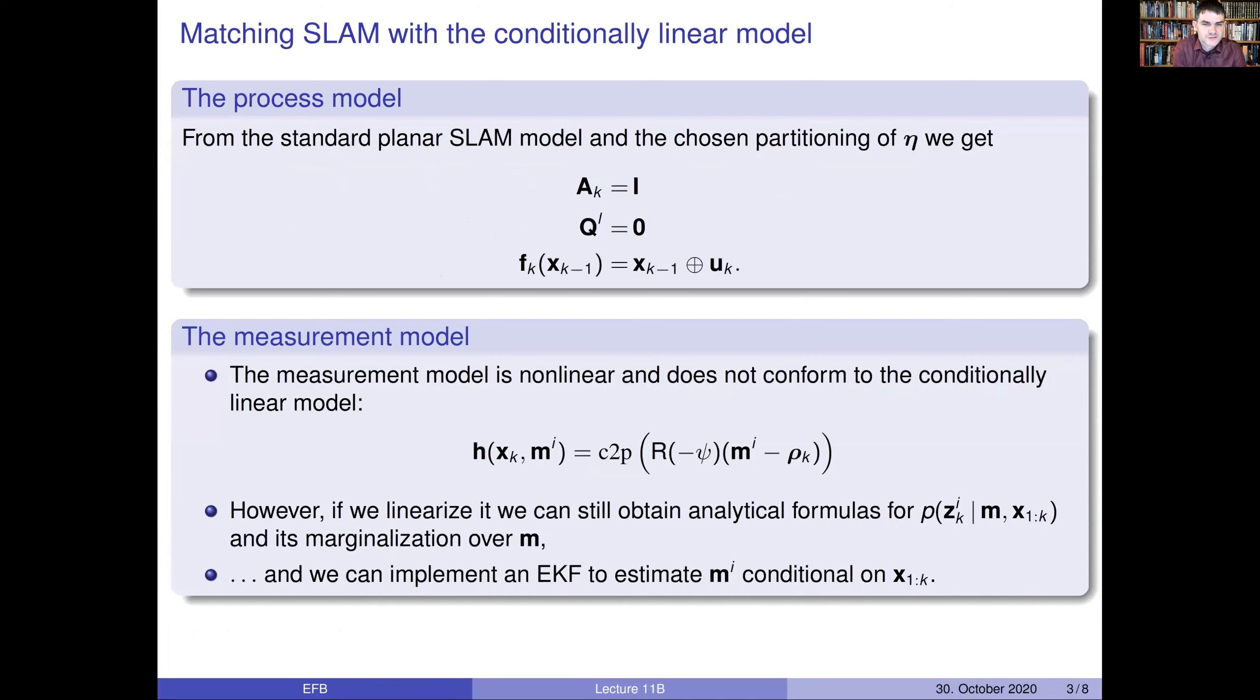So, how does this conform with the general Rao-Blackwellization framework? If you look at the process model for the landmarks, which is now the linear part, nothing is going to happen with them. It's part of the process. So, we just have an identity matrix there, which clearly is a linear structure. Also, the evolution of the nonlinear part has no impact on the landmarks in the standard parameterization of SLAM. But of course, the evolution of the pose is nonlinear because of the orientation expressed by this compounding operator that I've introduced earlier.